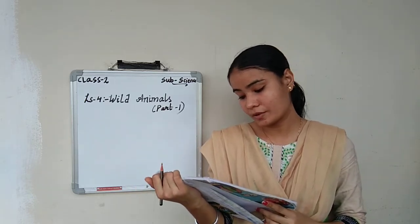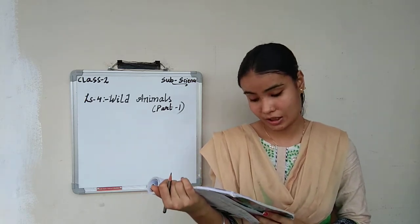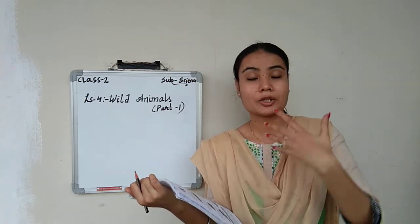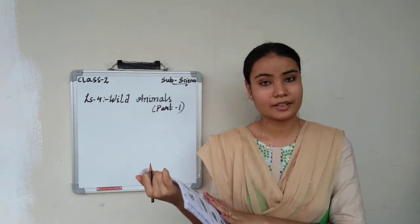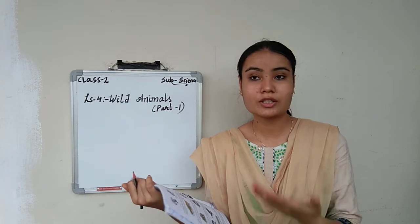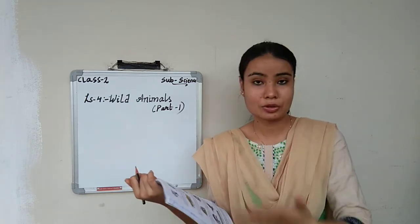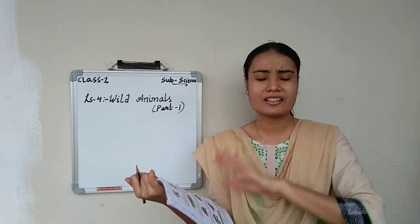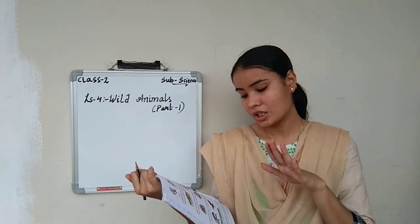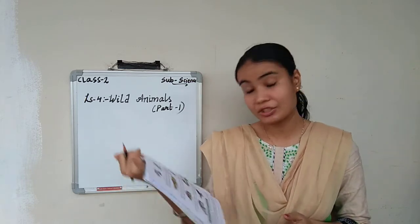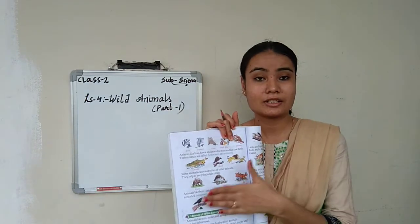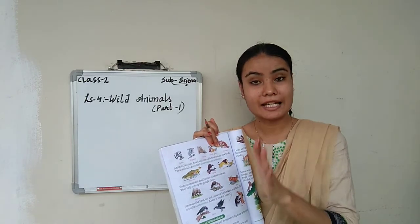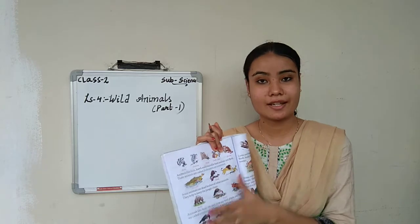Some animals eat the dead bodies of other animals; they help to keep the jungle clean. They eat the dead animals — that's why they are called cleaning animals, or animals that help keep the jungle clean. Those animals are hyena, vulture, and fox. They don't eat plants and they don't hunt — but they eat animals which are already dead.